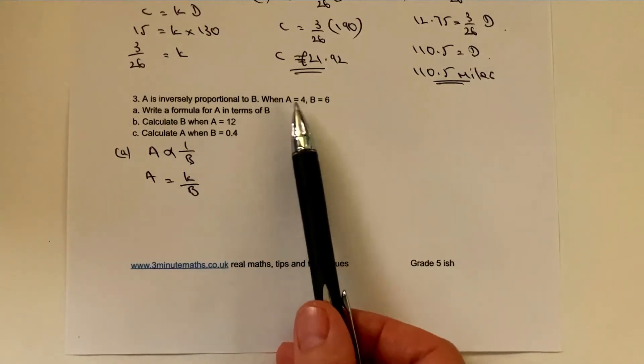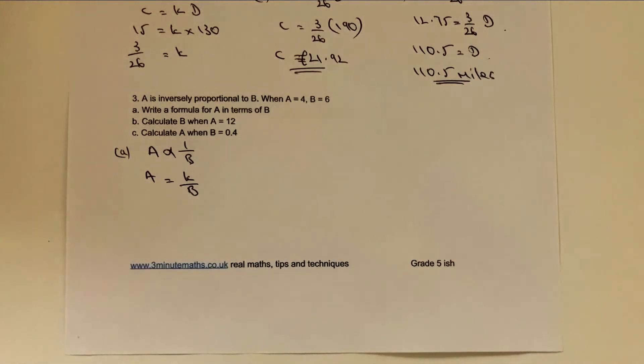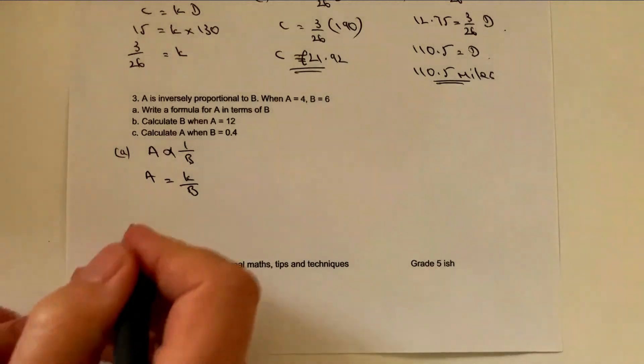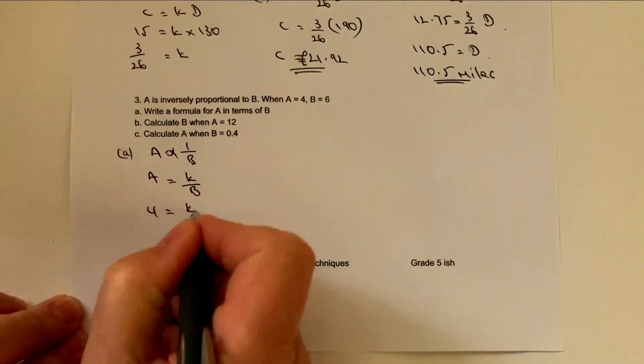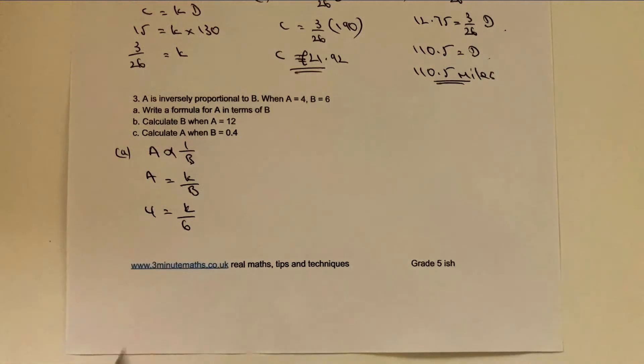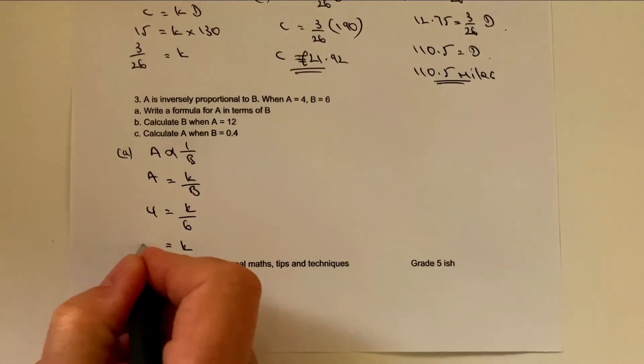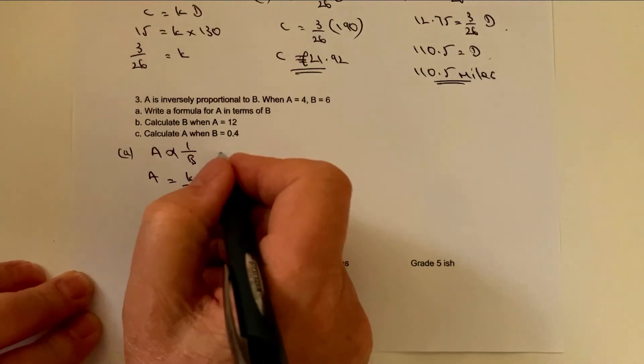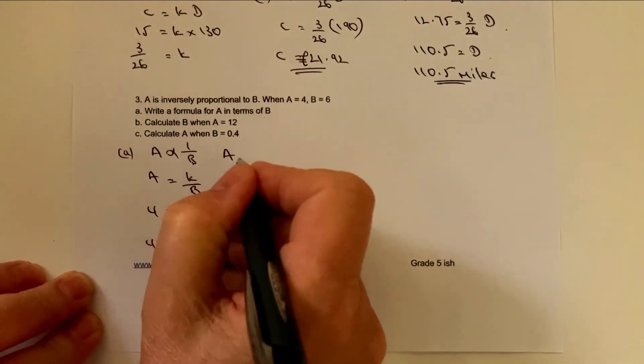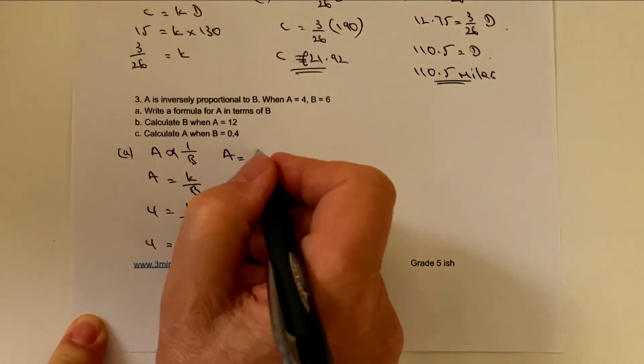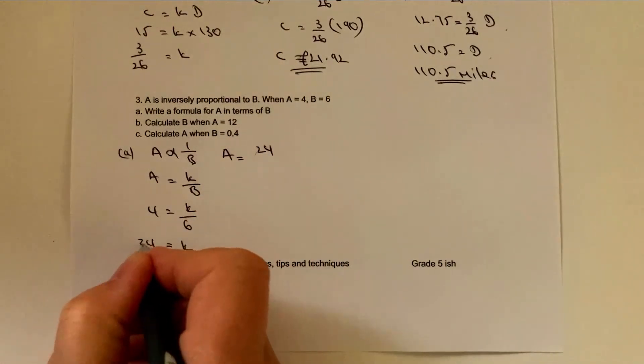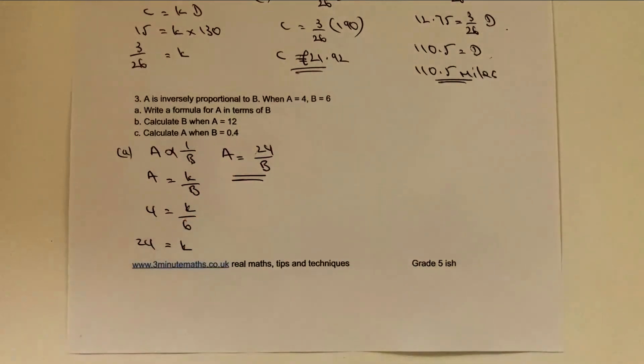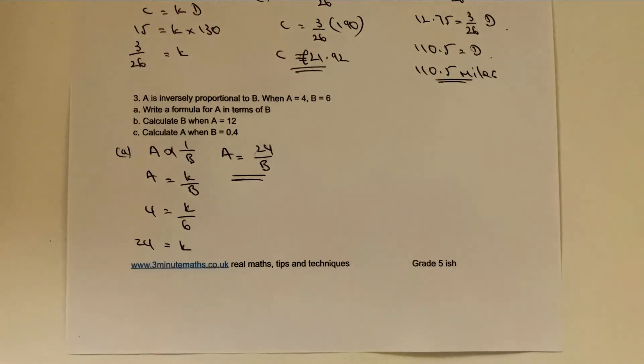We are told that when A equals 4, B equals 6. So again, we plug the numbers in. We say 4 equals K over 6. 6 times 4 is 24. Therefore K equals 24. So in answer to the first question, the formula itself is A equals 24 over B. And that's the answer to the first question.